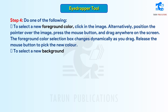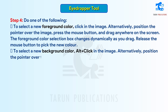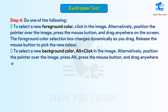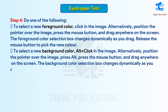To select a new background color, Alt-click in the image. Alternatively, position the pointer over the image, press Alt, press the mouse button and drag anywhere on the screen. The background color selection box changes dynamically as you drag. Release the mouse button to pick the new color.